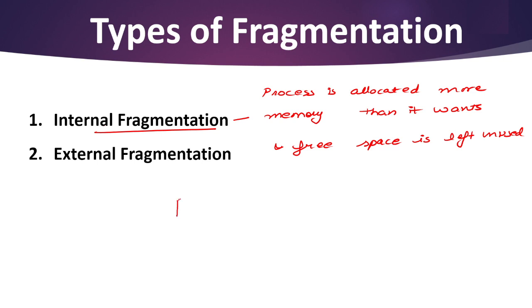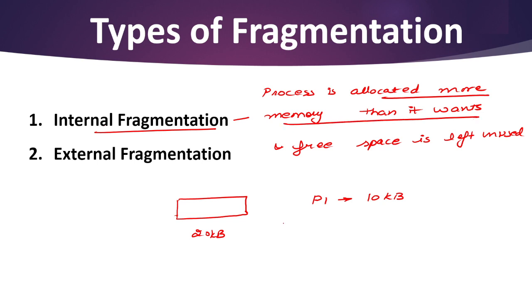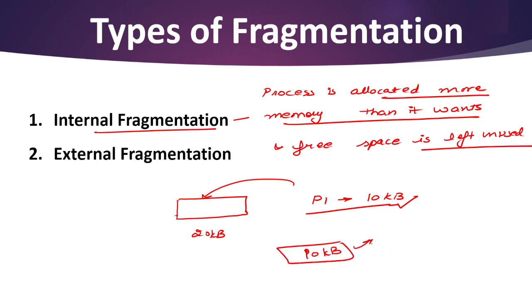Let's take an example. This is my memory space and I have one process P1. The size of process P1 is 10 KB but the available memory size is 20 KB. Now the process is allocated more memory than it wants — P1 wants only 10 KB space but it is allocated 20 KB. So the extra 10 KB of free space is left unused. This is called internal fragmentation: we have much space for other processes but the operating system allocated more memory to a process than it actually needs.